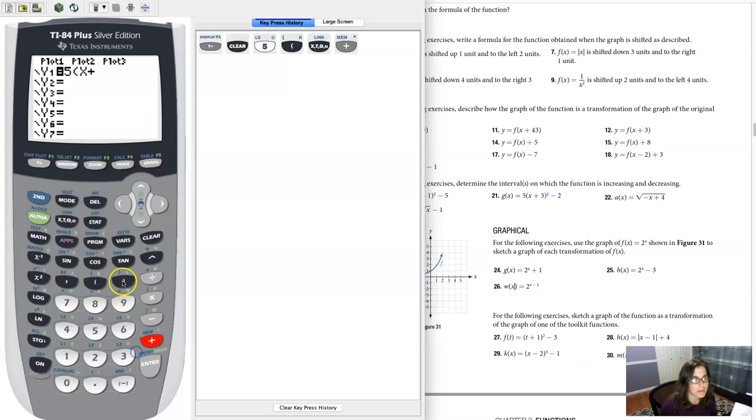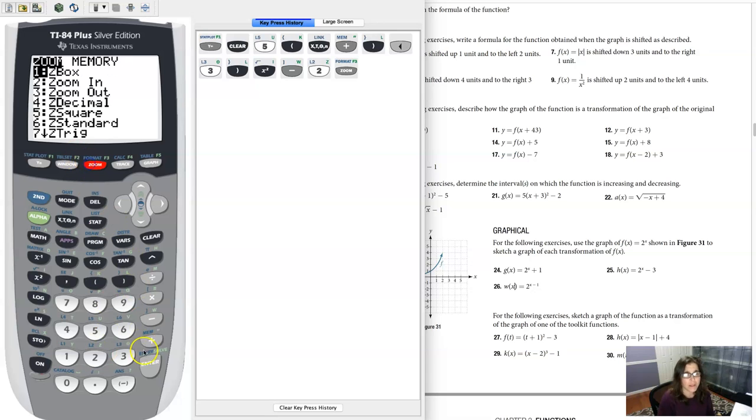I'll put the x plus 3 in, okay minus 2, and since we're on a strictly math problem, I'm gonna hit zoom 6.